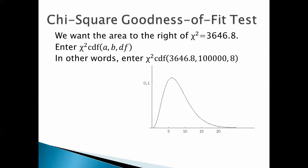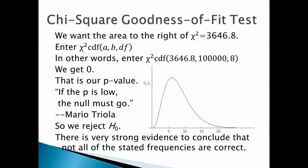Find the p-value. We can do this. We want the area to the right of chi-square equals 3646.8. So we enter chi-square cdf. This is available under distr. So look for distr on your calculator. a is the left endpoint, b is the right endpoint to the interval, and df is degrees of freedom. So in this case, the left endpoint is 3646.8. The right endpoint is infinity, but we don't have an infinity button on the calculator. So we just enter something ridiculously large, like 100,000, and then 8. That's our degrees of freedom. And when we do that, we get zero.